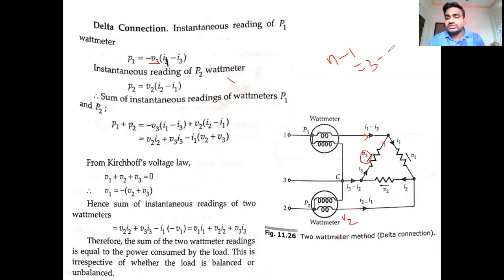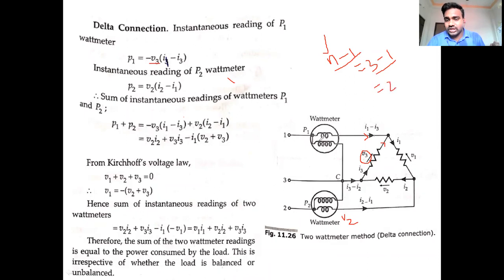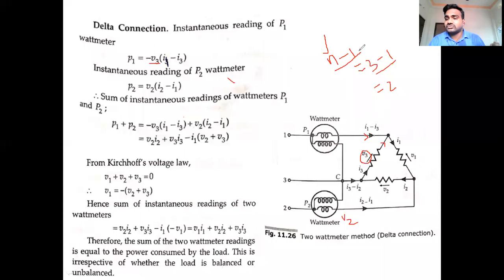Three conductors are present, so N = 3. With N minus 1 = 2, power is measured with 2 wattmeters. According to Blondel's theorem, if the common point of the voltage elements is connected on one of the lines, power measurement is done with N minus 1 conductors, which is 3 minus 1 = 2 wattmeters. This proves Blondel's theorem again.